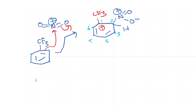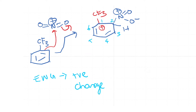An electron withdrawing group next to a positive charge is not a good idea. Therefore, one can expect that this intermediate would be quite unstable.